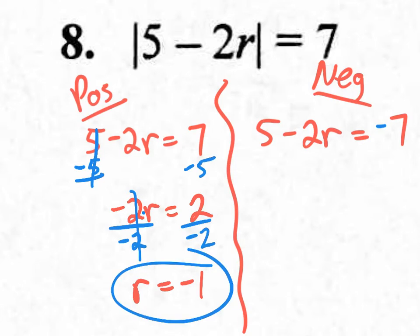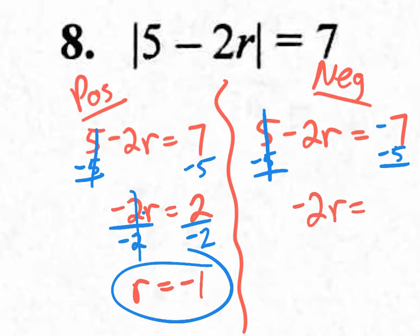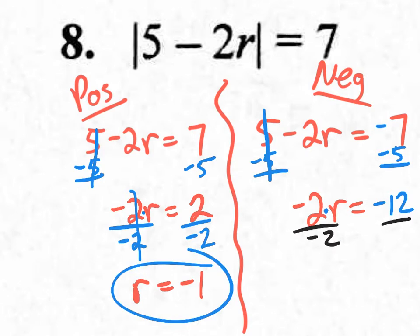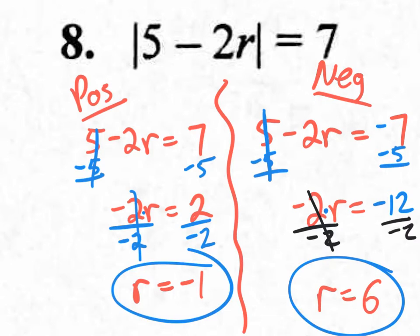For the negative situation: 5 minus 2r equals negative 7. Subtract 5 from both sides: negative 2r equals negative 12. Divide both sides by negative 2: r equals positive 6, since a negative divided by a negative equals a positive. Those are your two answers. Just because you're doing the positive situation doesn't mean you get a positive answer, and vice versa.